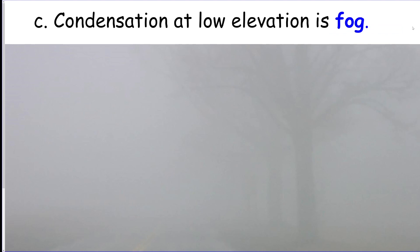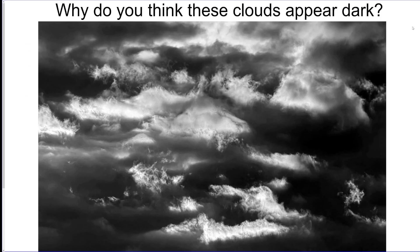If you get cloud formation or condensation at low elevation, that's what we call fog - like a cloud on the ground. When you see a dark cloud, it's dark because there's so much liquid water inside of it that the light can't really get through. That normally signifies rain because those raindrops get so heavy they eventually fall.